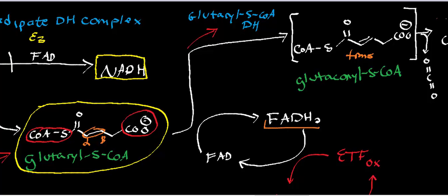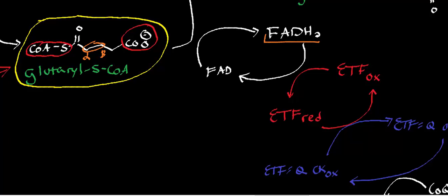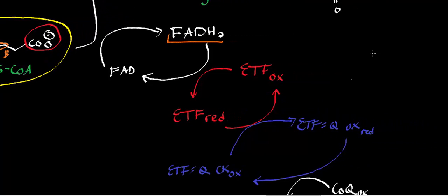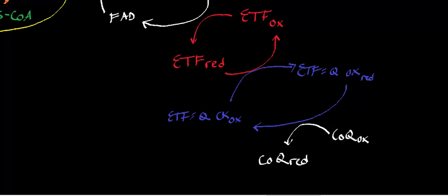Let's talk about the FADH2. The FADH2 is going to transfer its electrons through a series of proteins. The initial electron acceptor from FADH2 is something called electron-transferring flavoprotein. Starting in the oxidized state, it picks up the electrons from FADH2, regenerating FAD and the resting state of glutaryl-CoA dehydrogenase, yielding electron-transferring flavoprotein in the reduced state. That reduced ETF then donates its electrons to electron-transferring flavoprotein ubiquinone oxidoreductase, which catalyzes the transfer of those electrons to reduce ubiquinone to ubiquinol.